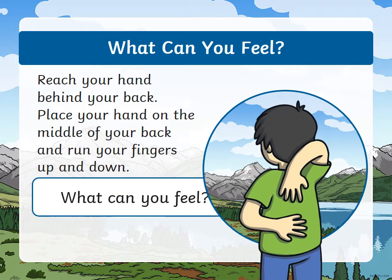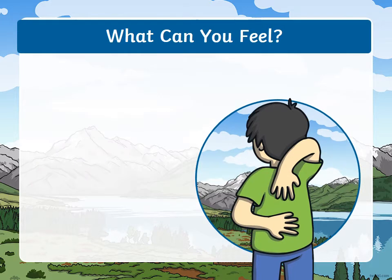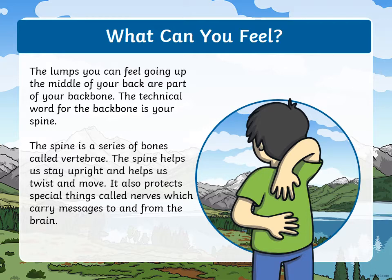What can you feel? Now reach your hand behind your back, place your hand on the middle of your back and run your fingers down and up. The lumps you can feel going up the middle of your back are part of your backbone. The technical word for backbone is spine. The spine is a series of bones called vertebrae. The spine helps us stay upright and helps us twist and move. It also protects special things called nerves, which carry messages to and from the brain.